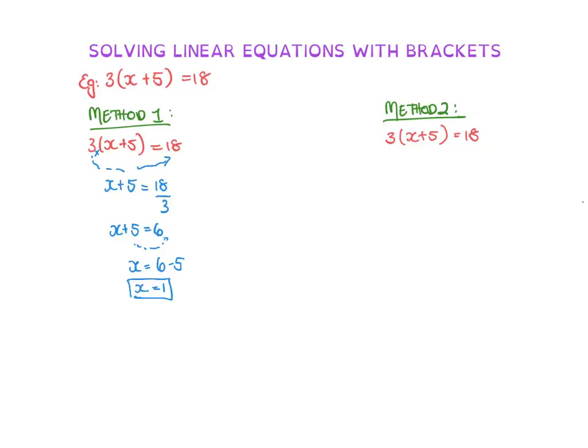The other method we could do is we could expand our brackets. So practicing what we did last. So we go 3 times x is 3x. And 3 times 5 is 15 and equals 18. And then we can go about solving. So we move this 15 first. So we'd be left with 18 minus 15.